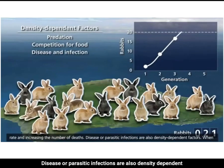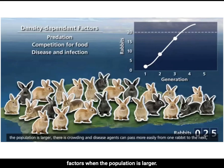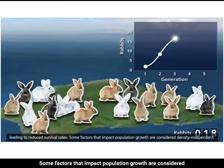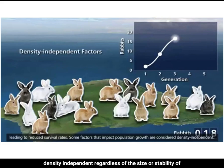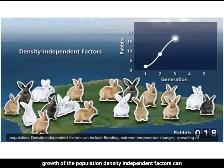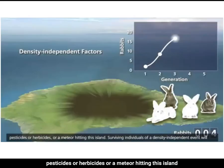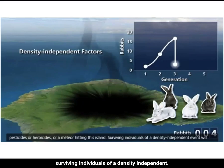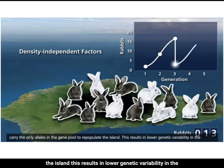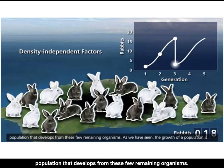Disease and parasitic infections are also density-dependent factors. When the population is larger, there is crowding and disease agents pass more easily from one rabbit to the next, leading to reduced survival rates. Some factors are density-independent: regardless of the size or stability of the population, they will affect growth. Density-independent factors include flooding, extreme temperature changes, spreading of pesticides or herbicides, or a meteor hitting the island. Surviving individuals of a density-independent event carry the only alleles in the gene pool to repopulate, resulting in lower genetic variability in the population.